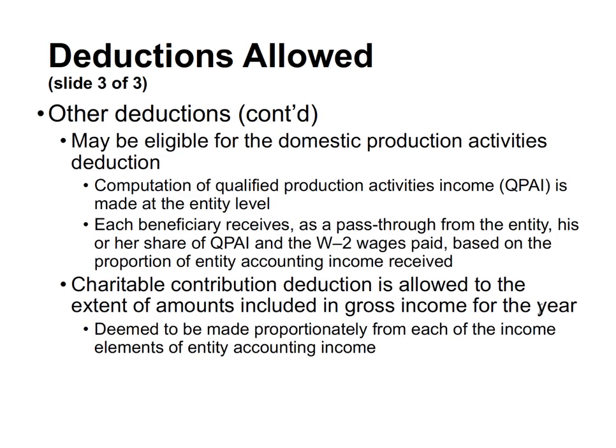Other deductions: the entity may be eligible for the domestic production activity deduction (DPAD) — note that this deduction's availability varies by year, so check whether it's currently allowed. The charitable contribution deduction is allowed to the extent of amounts included in gross income for the year.